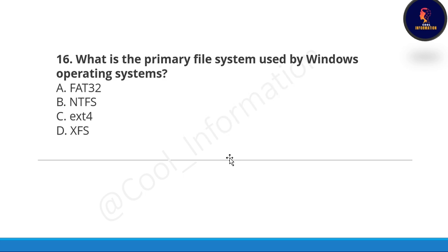Next question — very important, higher chances of this question in your exams: What is the primary file system used by the Windows operating system? Options are: FAT32, NTFS, ext4, or XFS. The correct option is Option B, NTFS. The full form of NTFS is New Technology File System. The full form of FAT, which can also be asked, is File Allocation Table.